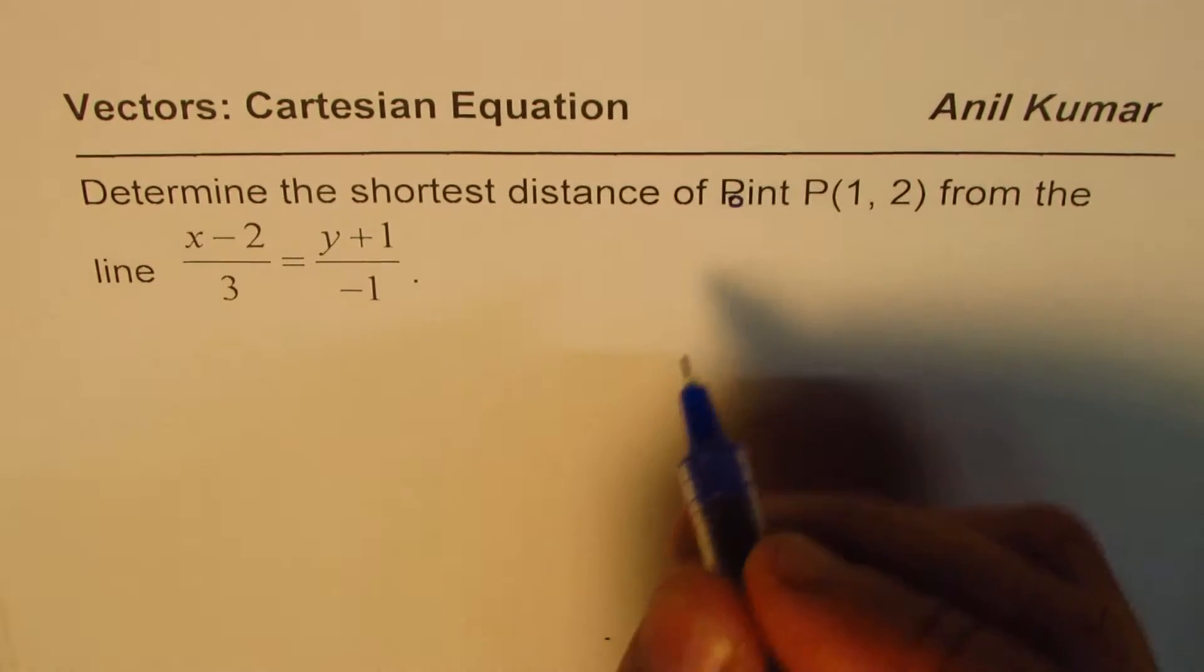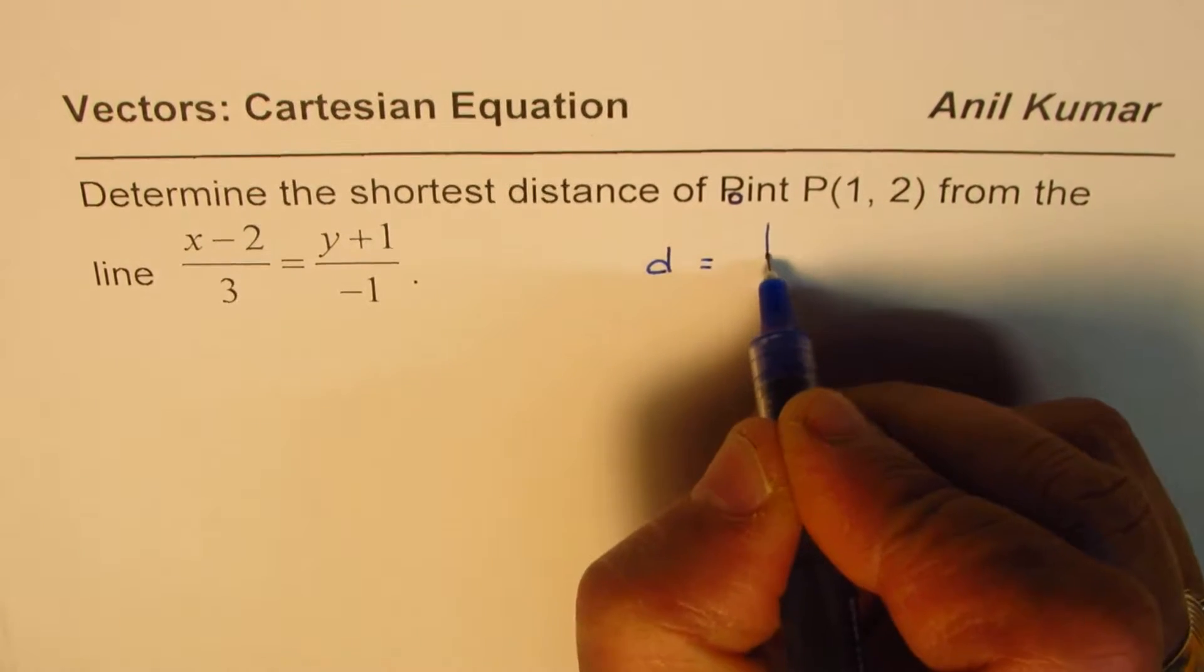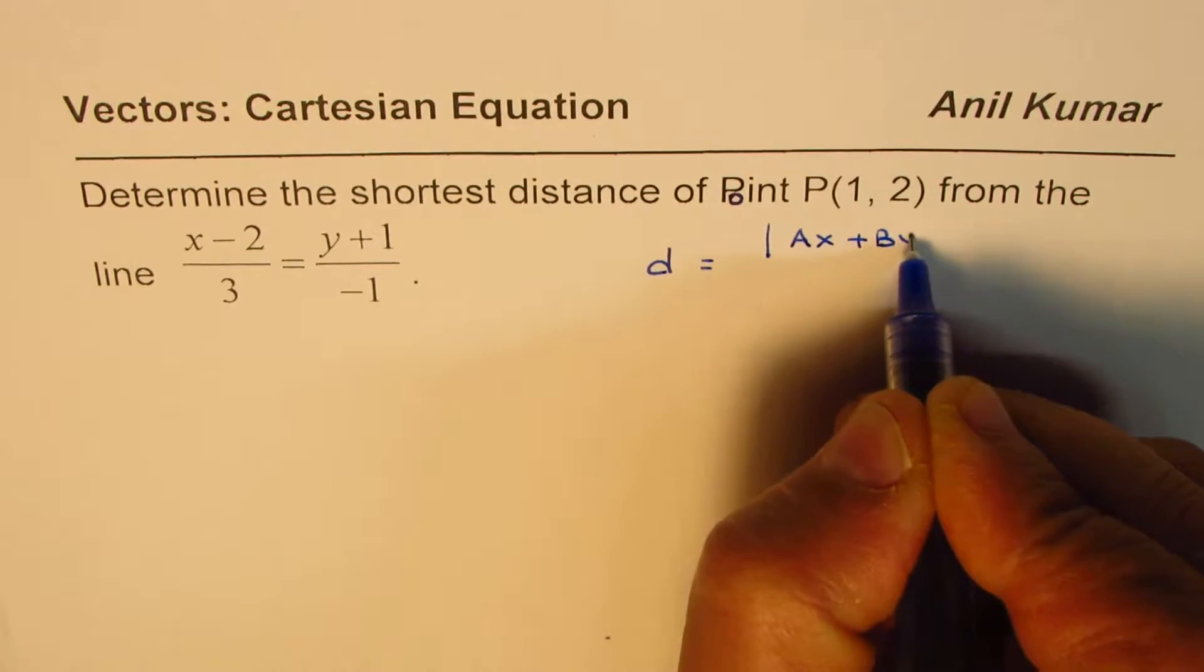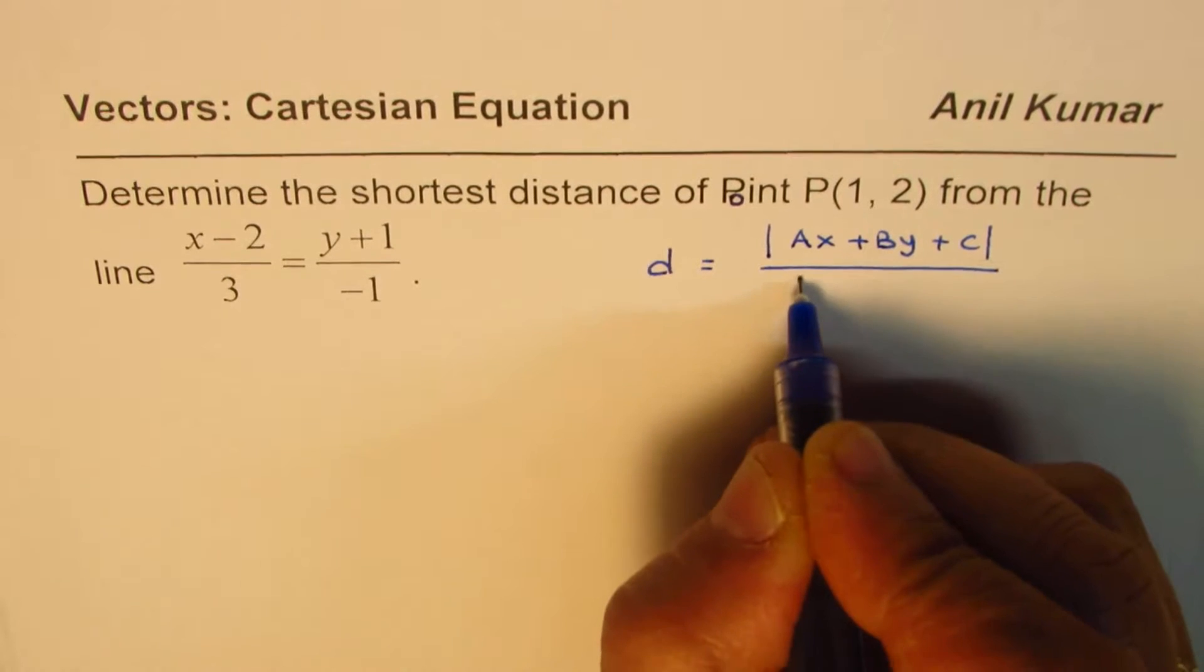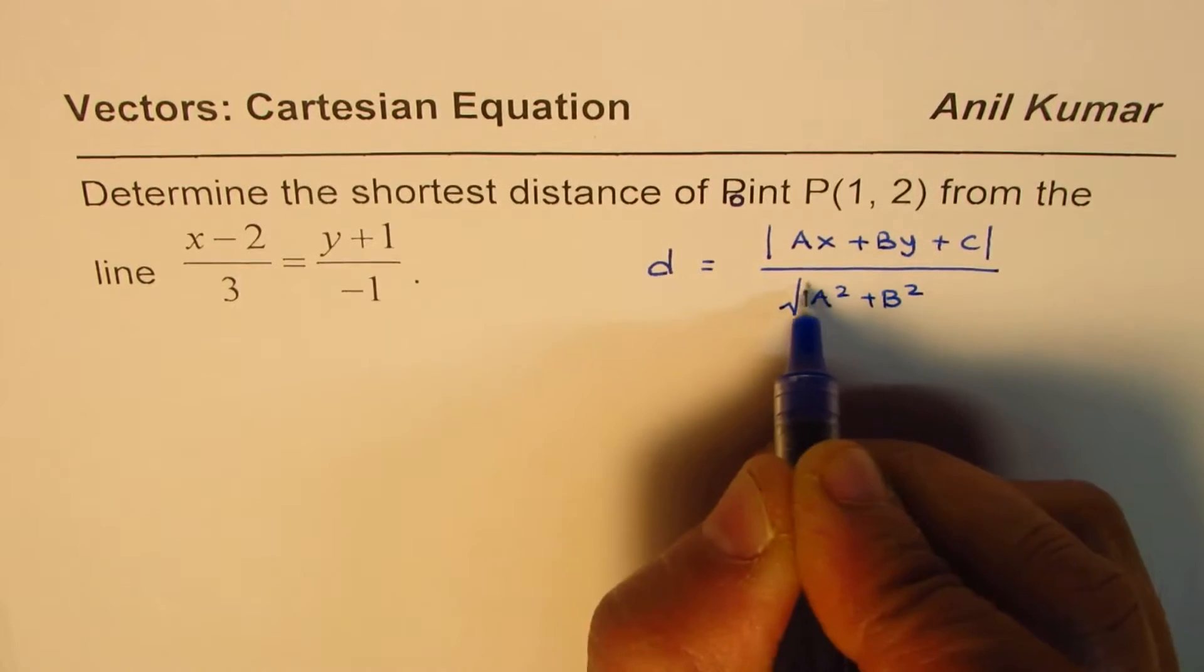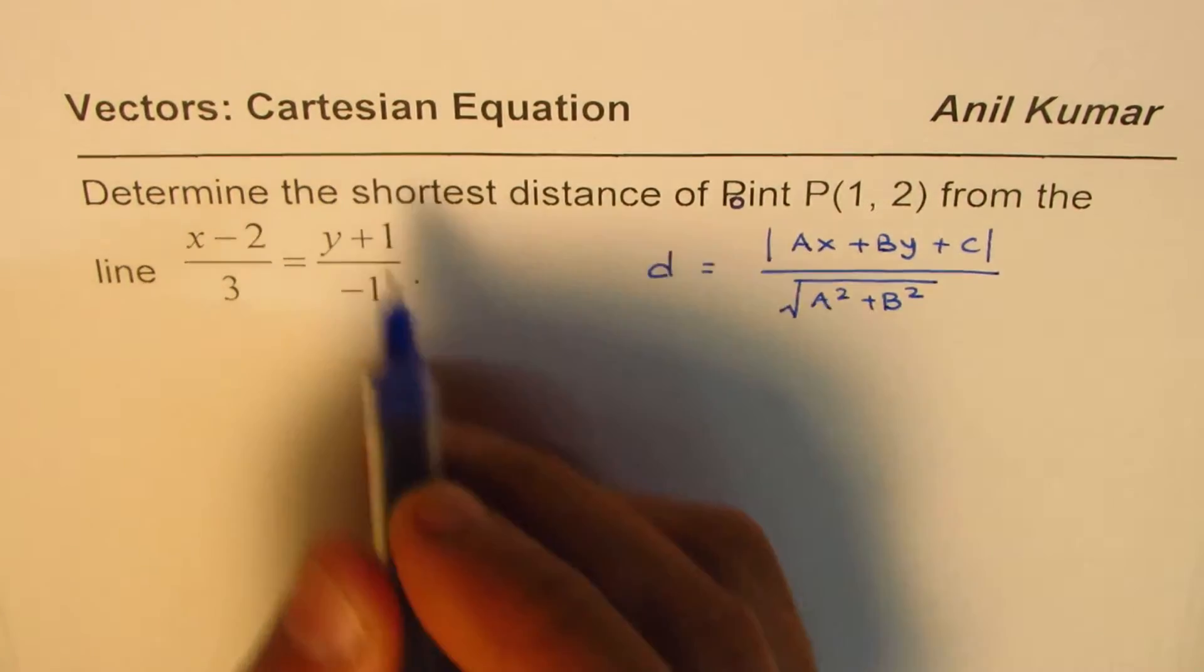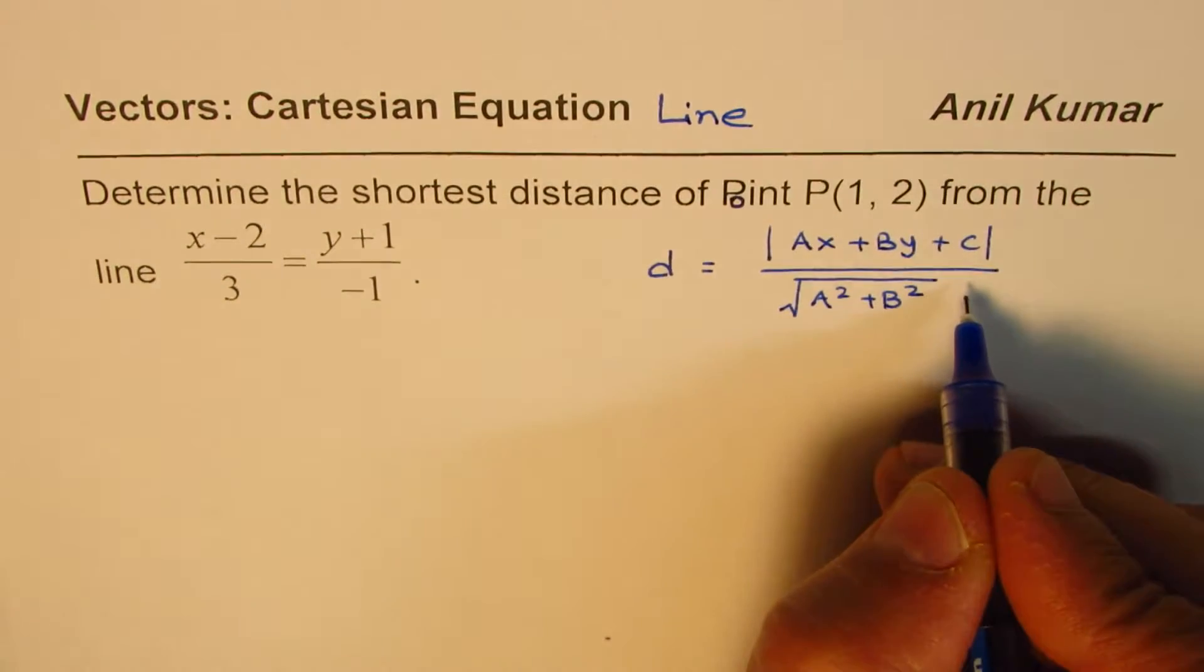Just to remind you, shortest distance d can be given as |ax + by + c| / √(a² + b²) if the line is given in Cartesian form. So if we have Cartesian equation of a line, then this is the formula which can be used.